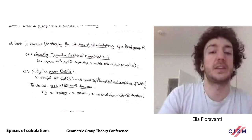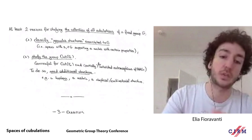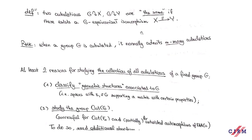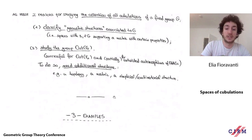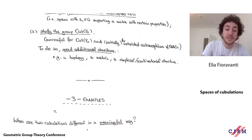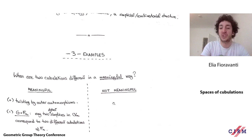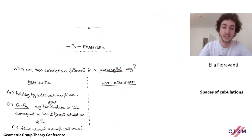So at this stage I hope I've provided some motivation, but this is all very general and abstract, so let me give some more concrete examples. First, I want to give more examples of the idea that when a group is cubulated, it normally tends to be so in infinitely many different ways. But second, I need to mention some caveats: there can also be different cubulations of a group that are different for trivial reasons, and we'll have to be wary of this.